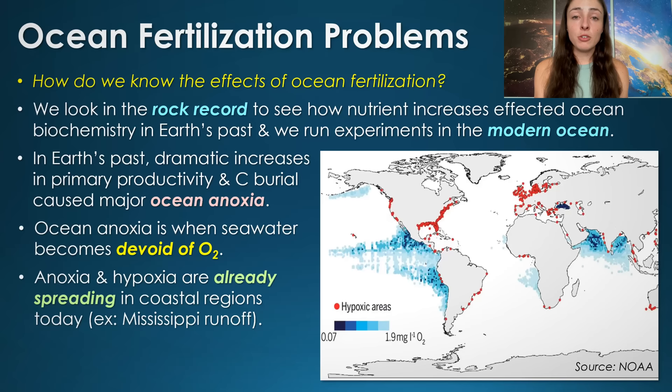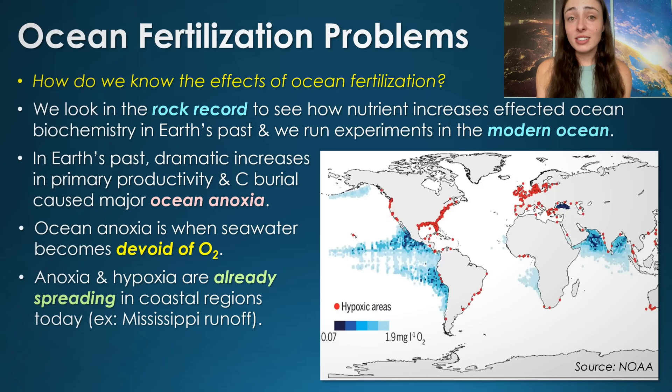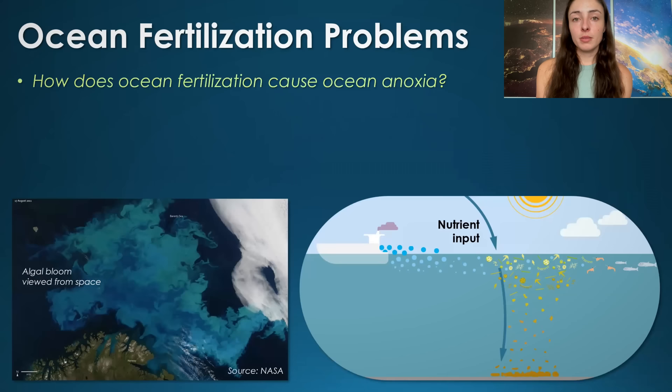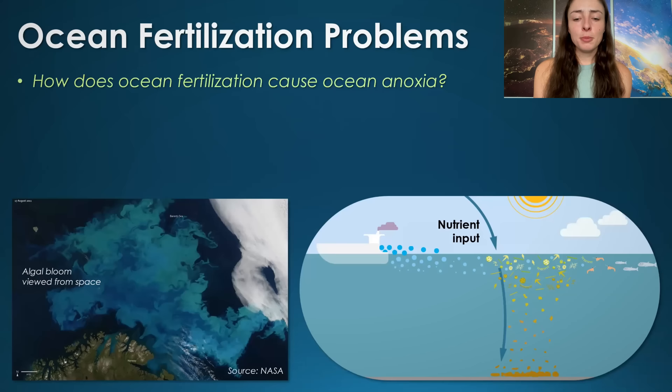During ocean anoxic events, microbes called sulfate-reducing bacteria — which I work with in the lab — spread because they don't like oxygen. Their metabolic byproduct is hydrogen sulfide, which is a toxic substance at high enough concentrations to animal life. So during ocean anoxic events in Earth's history, the ocean became not only anoxic — lacking oxygen — but also really sulfidic, which hindered animal life even more. This is one of the major consequences of ocean fertilization if we decided to carry it out.